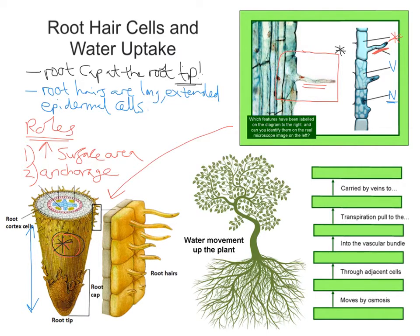I give my students this diagram on the far right of the screen, where we're looking at water moving up the plant. We start ultimately with water in the soil — that is our starting point. Water in the soil, and we mustn't forget that's our starting point. Then the water moves by osmosis, and the next thing the water is going to come into contact with is the root hair cell.